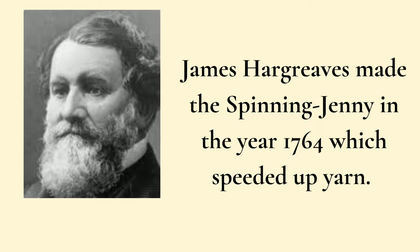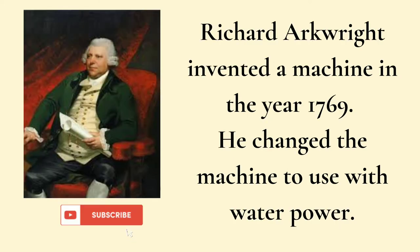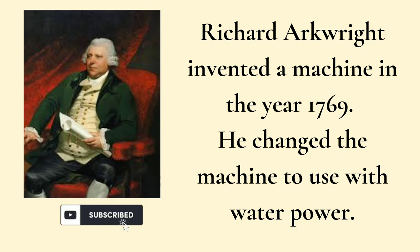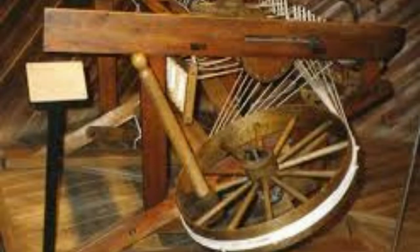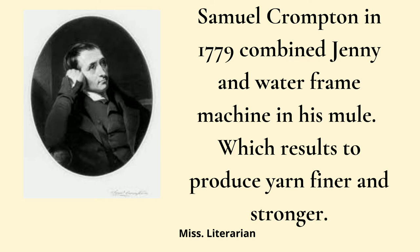In the year 1764, a carpenter named James Hargreaves made the spinning jenny, which speeded up the making of yarn. In 1769, a better machine was invented by Richard Arkwright, a barber. Arkwright adapted his machine to use water power, and so it was called the water frame. The great advantage of this machine was that it produced stronger yarn.